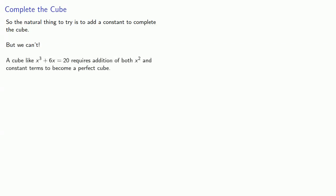So the natural thing to try is to add a constant to complete the cube. But we can't. And the problem is that a cube like x³ + 6x = 20 requires the addition of both x squared and constant terms to become a perfect cube. So now what?